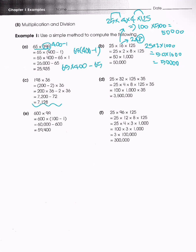All these other examples are of a similar type where we can make 198 into 200 minus 2, and express 32 as a product of 4 and 8, to use identities like 8 times 125 equals 1,000 and 25 times 4 equals 100. For numbers like 99, we express that as 100 minus 1 and distribute. We'll move on since all these examples are really similar.